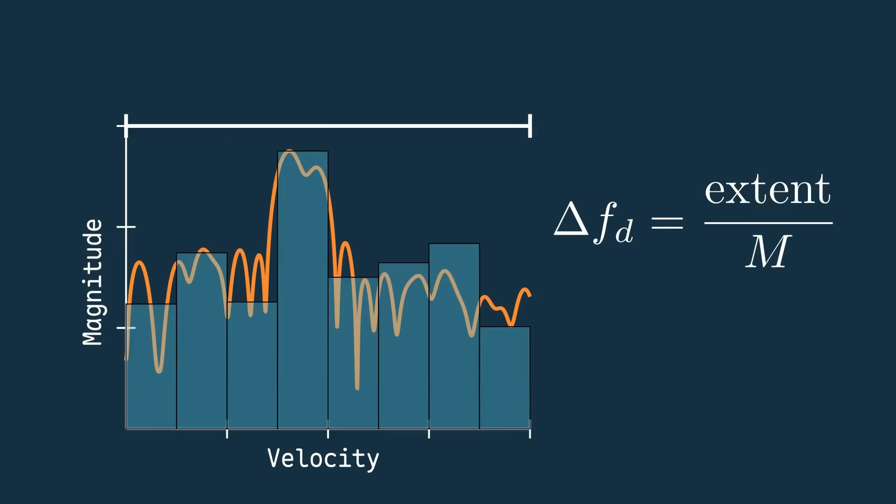Luckily, the relationship between velocity and Doppler frequency shift is a known formula, velocity equals Doppler frequency times the wavelength over 2. Since we previously took the Fourier transform of this axis, the extent will be negative half the sampling frequency to half the sampling frequency, which in this case is negative half the PRF to half the PRF.